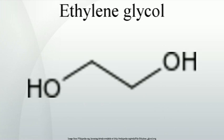A higher selectivity is achieved by use of Shell's omega process. In the omega process, the ethylene oxide is first converted with carbon dioxide to ethylene carbonate, then reacted with water in a second step to selectively produce monoethylene glycol. The carbon dioxide is released in this step and can be fed back into the process circuit, coming in part from the ethylene oxide production where a part of the ethylene is completely oxidized.